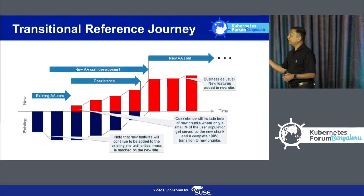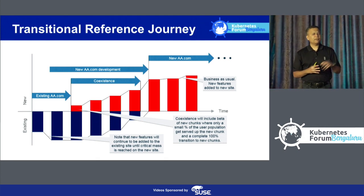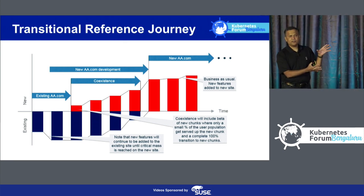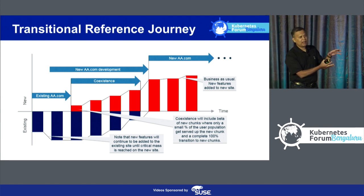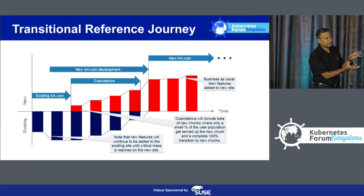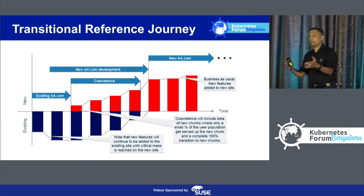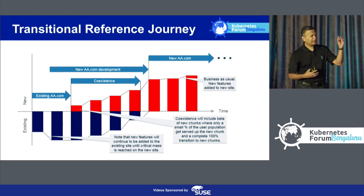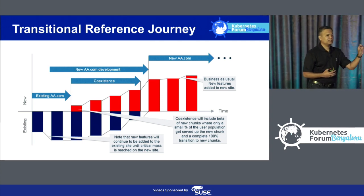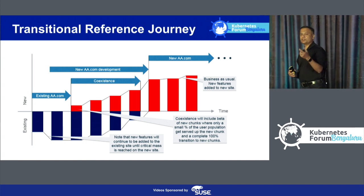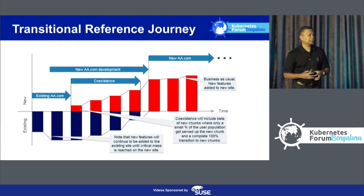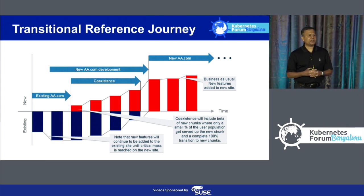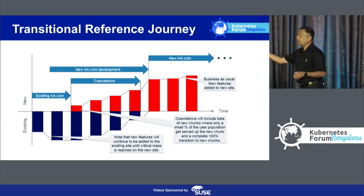I'll illustrate this with a very simple example of what we did with American Airlines. If you look at this picture, it's about using what we call the strangler pattern, where you run both new and existing in parallel. While they continue to co-exist, you slowly turn off the traffic coming to the old and send more and more towards the new applications, while delivering features to both, until at a tipping point you have a critical mass of users using the new and then you can turn off the old. The reason I'm bringing this up is because what we have in the community — what we're building around Kubernetes and many of the projects and technologies — allows us to implement these patterns.